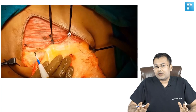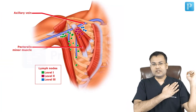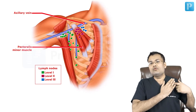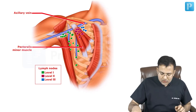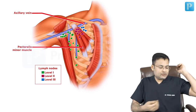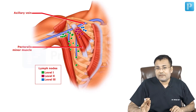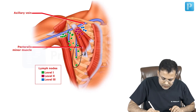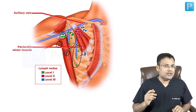Let's discuss the important points related to axillary dissection. There are three levels of lymph nodes in relation to pectoralis minor. Level 1 is located below and lateral. Level 2 is located behind pectoralis minor. Level 3 is located medial and above. Level 1 includes anterior, posterior, and lateral groups — remember APL: Anterior, Posterior, Lateral.